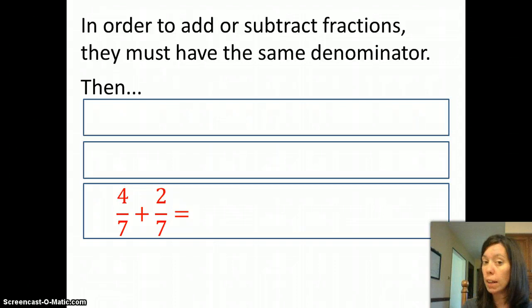That's different from multiplying and dividing. With multiplying and dividing, it's okay if the denominators are different. You just multiply them together.